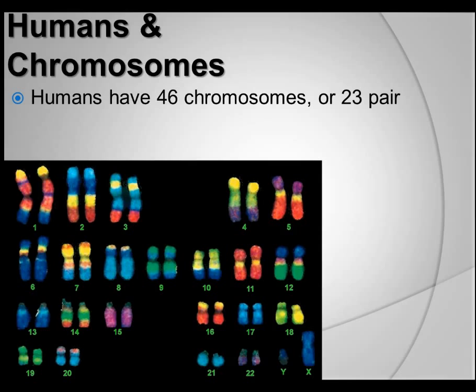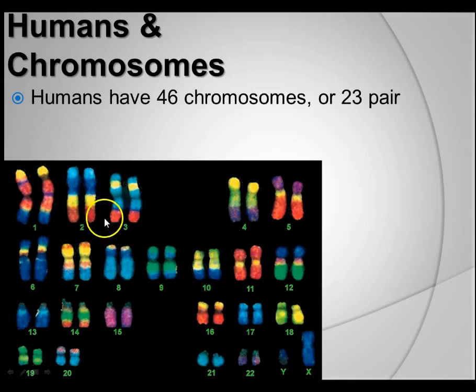Think of it as you have 23 pairs of shoes, but really you have 46 individual shoes. We'll talk about those more in just a second, but 46 total, 23 pairs. This is called a karyotype — it's the arrangement of all the chromosomes.